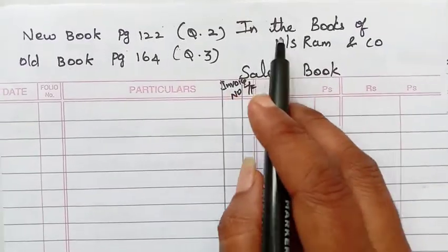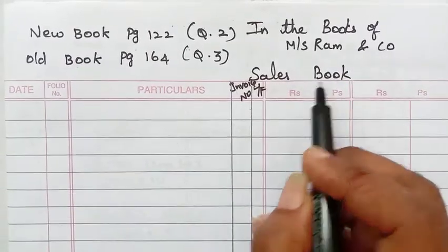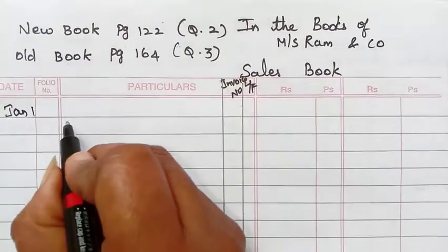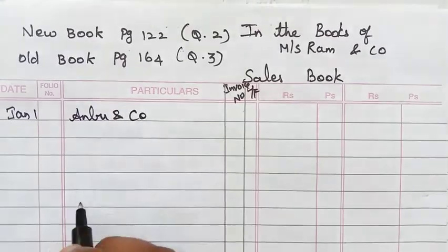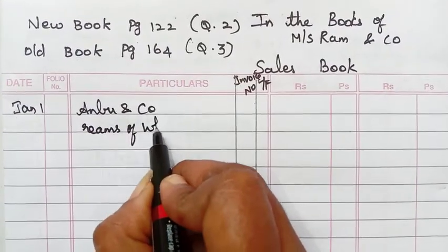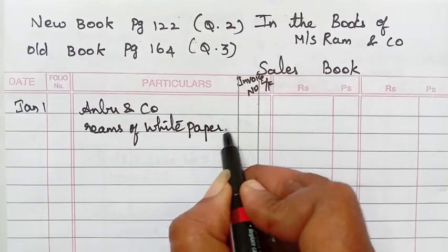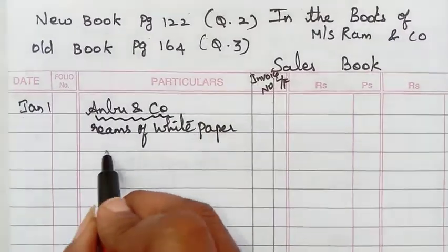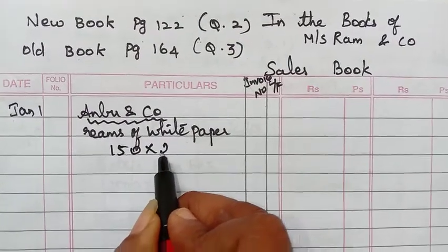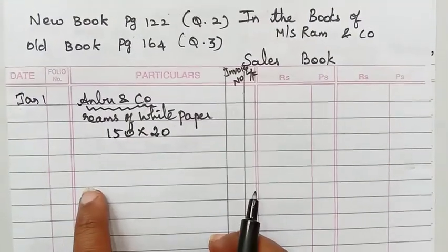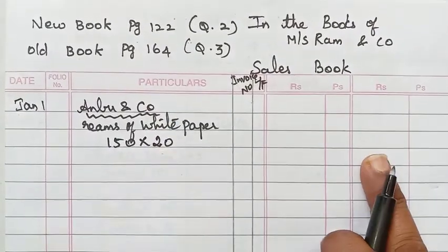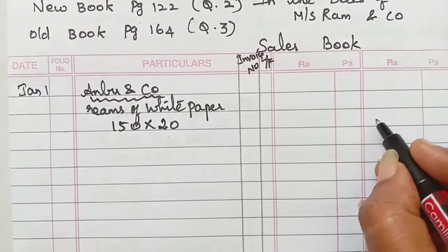We will write in the books of Mr. Ram and Co. sales book. The first one we will write as January 1 — Anbu and Co. What are we buying? Rims of white paper. From Anbu only we are buying. How much? 20 rims for 150 rupees each. So what we will write — 150 into 20. The outer column only we are going to write.